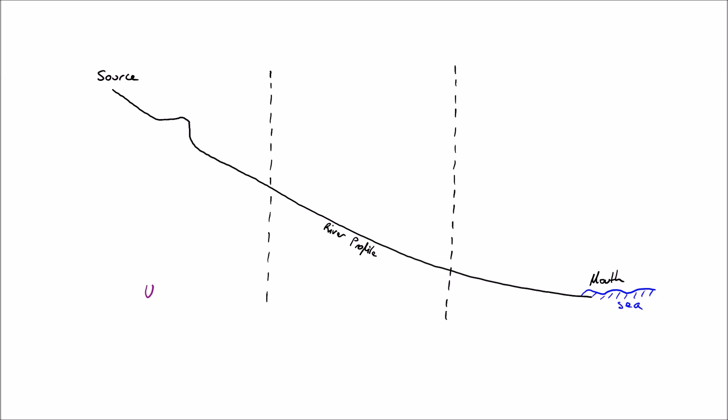Now each of these parts has got different characteristics. The upper part is dominated by erosion, the mid part tends to get a combination of both erosion and deposition, and the lower part is almost entirely deposition that's going on in this case.